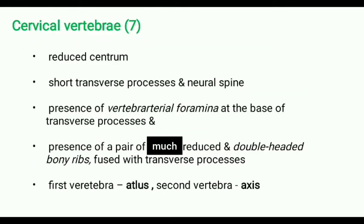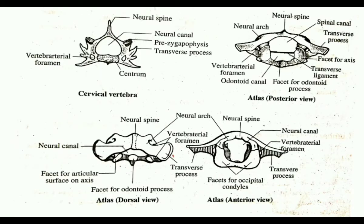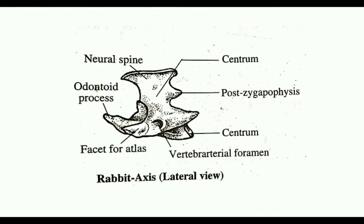There is a presence of a pair of much reduced and double-headed bony ribs completely fused with the transverse process. The first cervical vertebra is modified as atlas and the second is modified as axis.